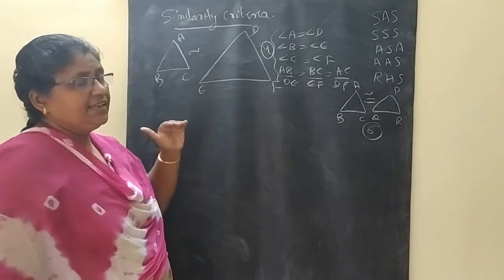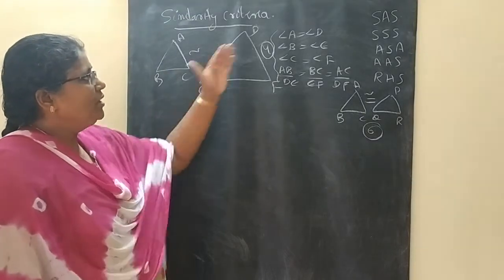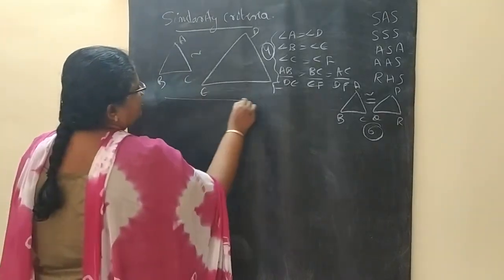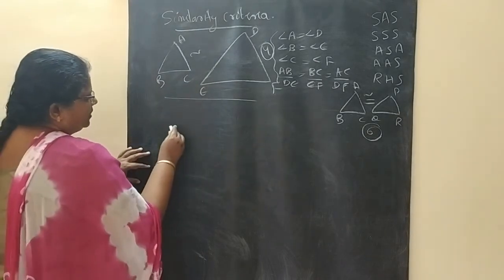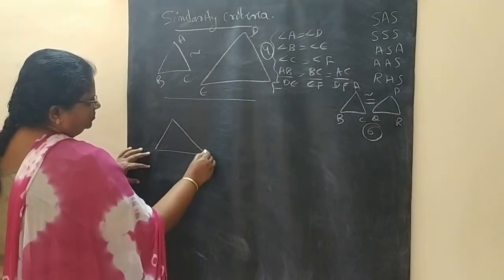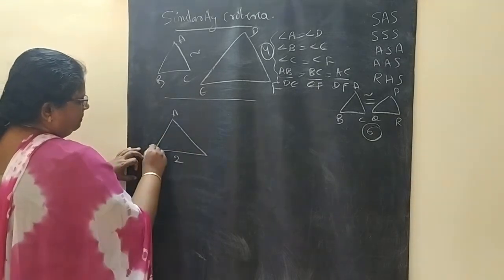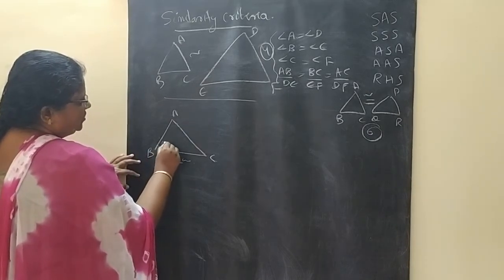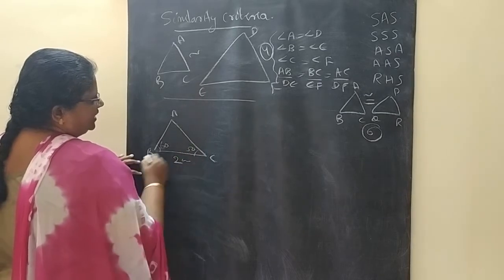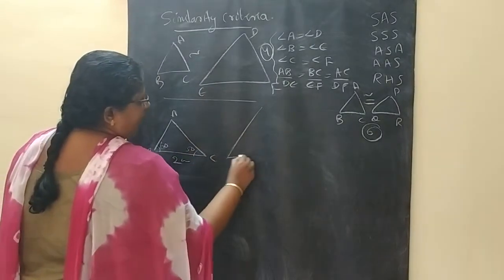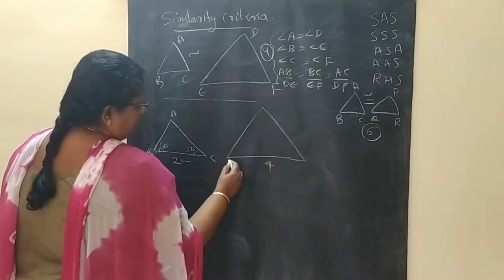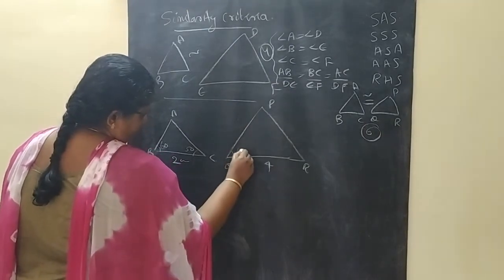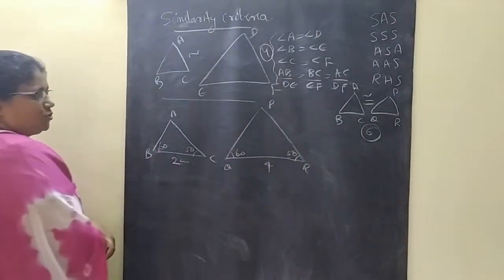Let me explain with an activity. Take one triangle ABC where one side is 2 cm, one angle is 60 degrees, and another angle is 50 degrees. Take another triangle PQR where the corresponding side is 4 cm, one angle is 60 degrees, and another angle is 50 degrees.